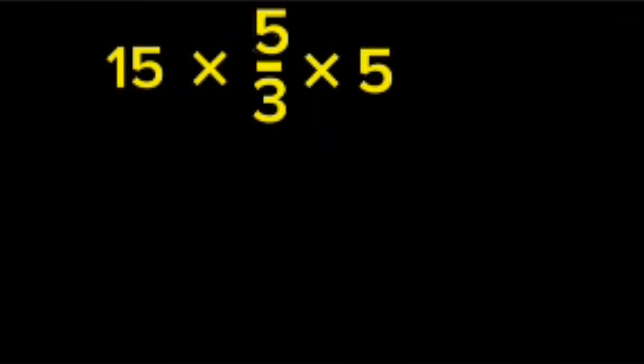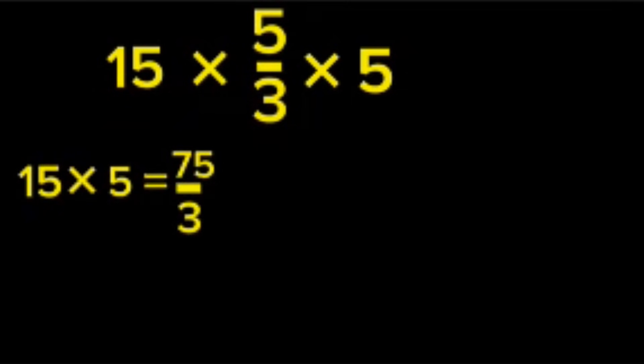Now, calculate carefully. 15 multiplied by 5 is 75. 75 divided by 3 is 25.